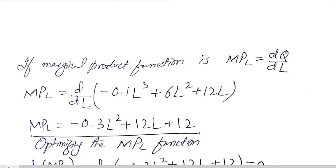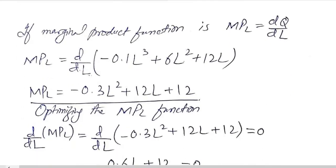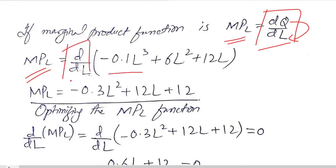Before maximizing the marginal product of labor, we need to calculate it. The marginal product of labor is found by differentiating the total production function with respect to labor. Taking this derivative gives us the marginal product of labor expression.